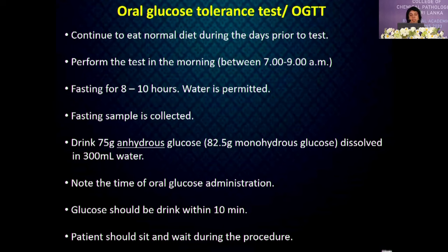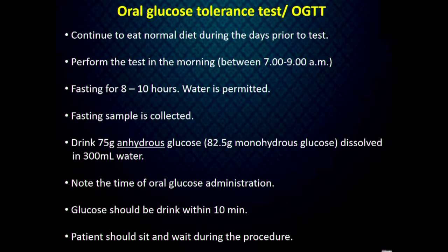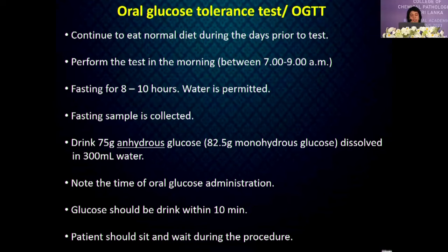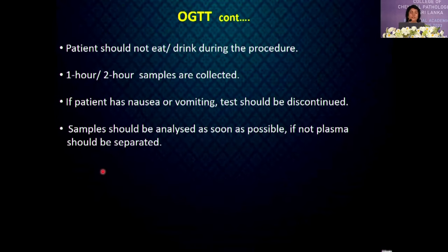The oral glucose tolerance test (OGTT) is used to assess postprandial glucose metabolism. The patient should consume a normal diet for at least 3 days prior. The test is performed in the morning after 8 to 10 hours of fasting, water is permitted. A fasting sample is collected, then the patient drinks 75 g anhydrous glucose or 82.5 g monohydrous glucose dissolved in 300 ml water within 10 minutes. The patient sits quietly, does not eat or drink during the procedure, and 1-hour and 2-hour samples are collected. If the patient has nausea or vomiting, the test should be discontinued and samples should be analysed as soon as possible.